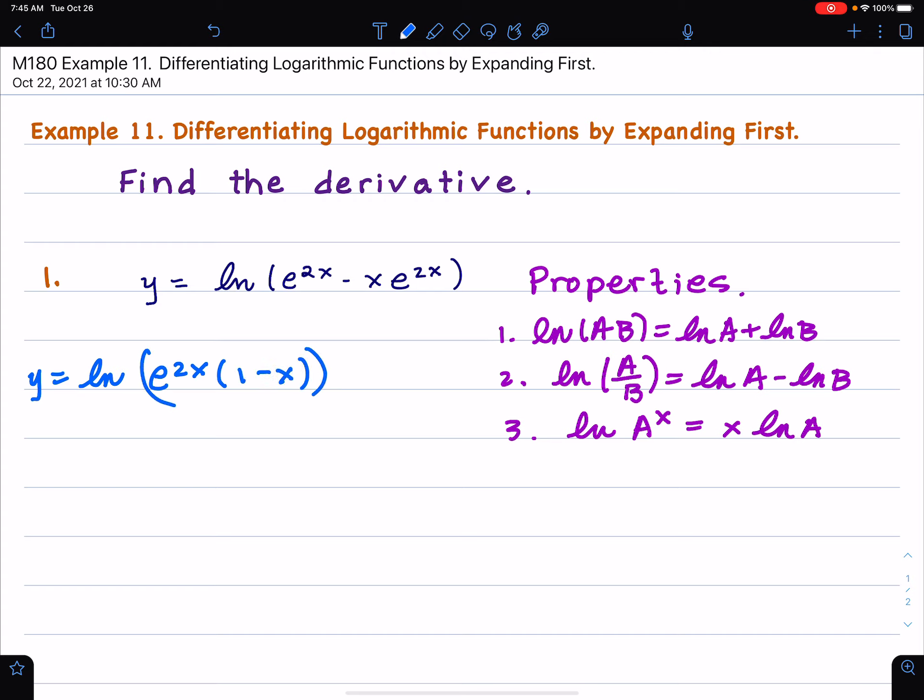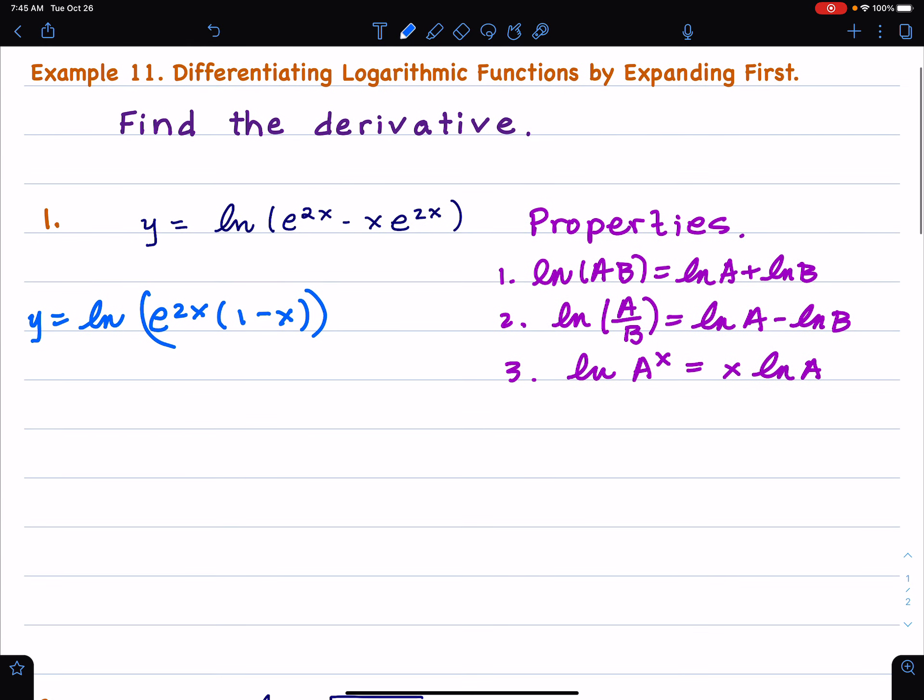And I could just go ahead and take the derivative using the chain rule. So the derivative, the chain rule would give us, for logarithm of all this stuff, call this u, the derivative would be 1 over u, so 1 over all this stuff times the derivative of this stuff here. It's okay, but then I have to use the product rule. But what I'm going to do is, I'm going to expand at this point so that I can save myself a little bit of work.